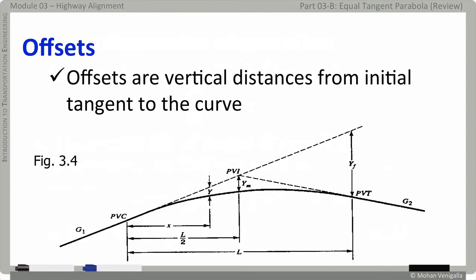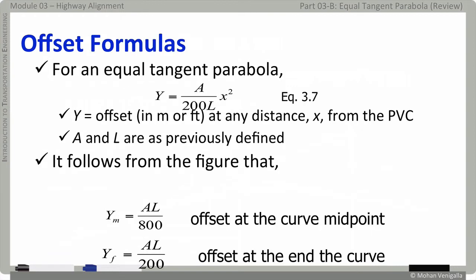Offsets is another important variable. This is denoted by uppercase Y, and this is measured from the tangent, initial tangent to the top of the curve. The lowercase y, if you remember, it is measured from PVC level to the curve. So, uppercase Y is from tangent to the top of the curve. And at middle point, that is at PVI, the value of uppercase Y_M is midpoint offset. And at the end point of the curve, which is point of vertical tangency, it is Y_F, which is the final point, Y sub F. That is the end point offset. Using simple trigonometry, you can derive all formulae for all these three offsets.